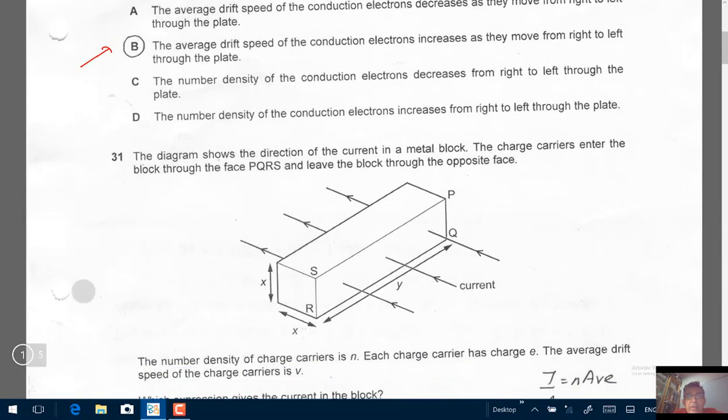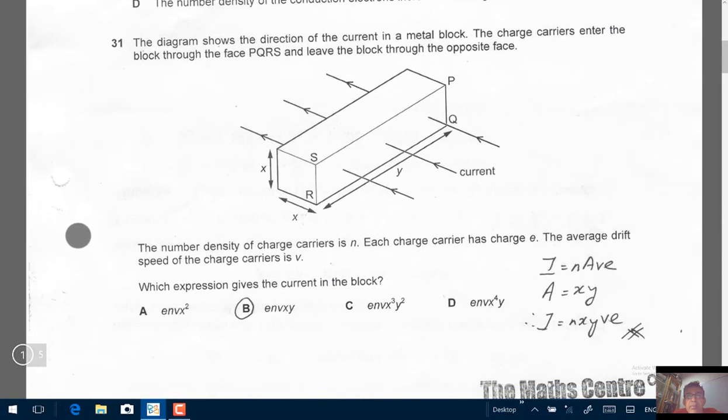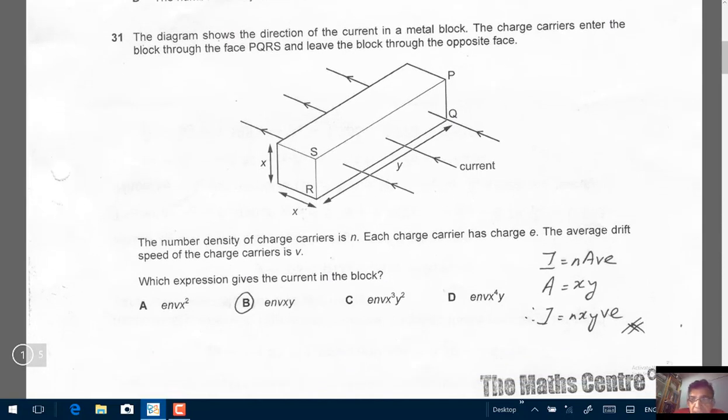Question number 31 is based on the same principle or same idea that this I equals to N A V E. The diagram shows the direction of the current in a metal block. The charge carriers enter the block through the face P, Q, R, S. This is P, this is Q, this is R, and this is S. And leave the block through the other side, the opposite side.